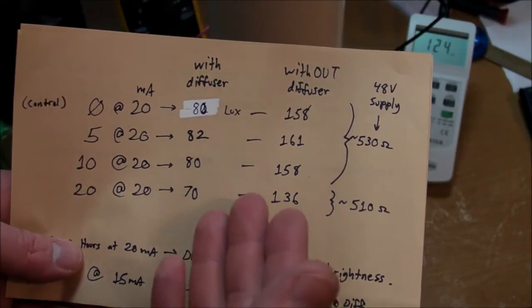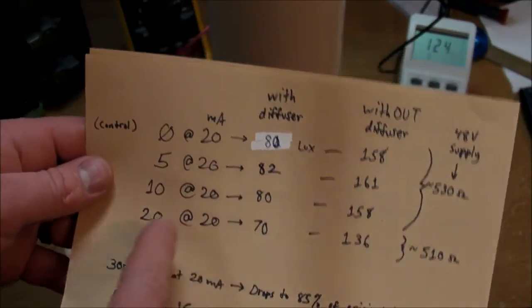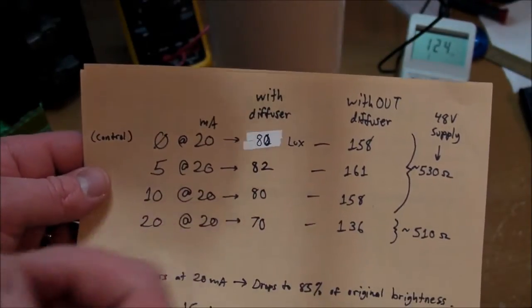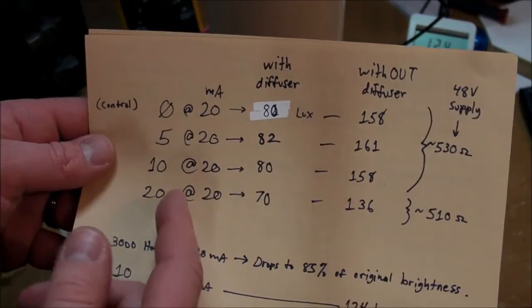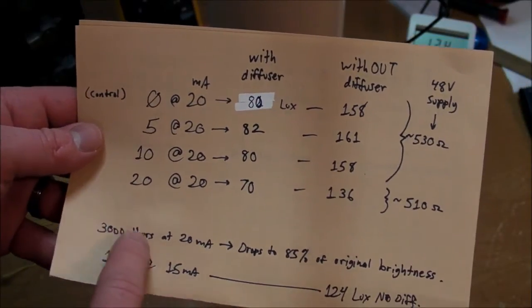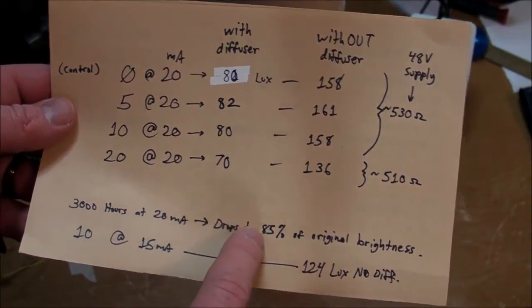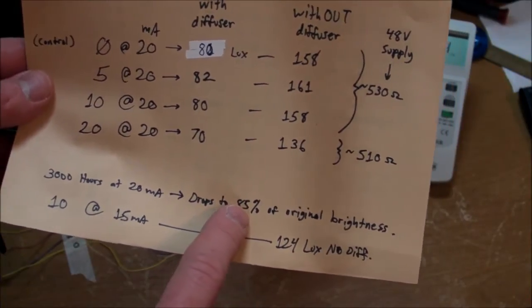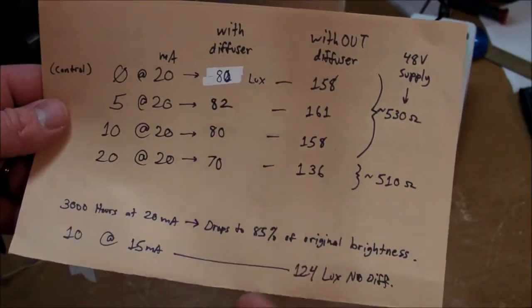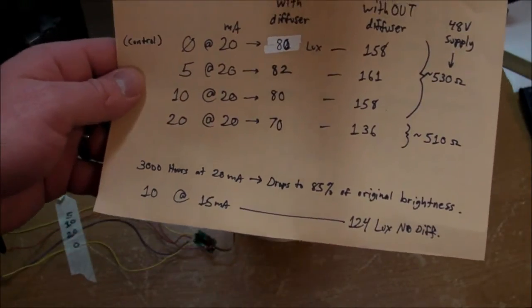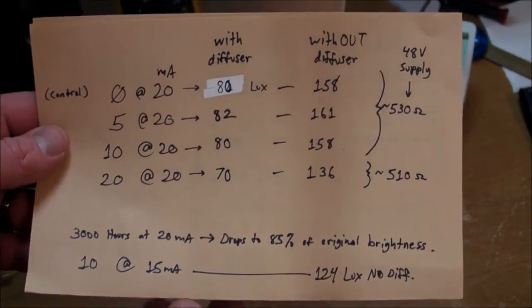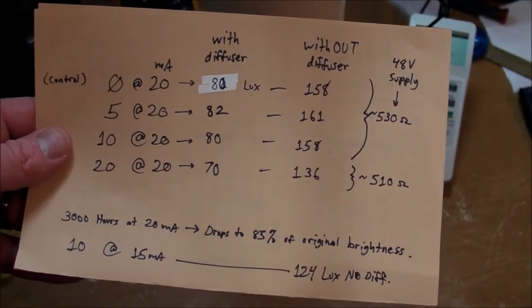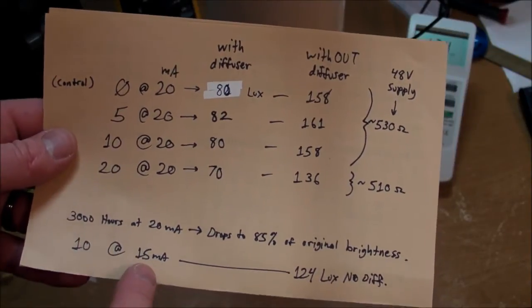Overall, now if I'm assuming that all the four individual sets were all electrically and optically identical at the beginning of this experiment, then running 3,000 hours at 20 milliamps would drop the brightness from the original brightness level down to 85% of that level over 3,000 hours. So it seems marginally viable as a room lighting application. And I could certainly make all this as a chandelier type thing.